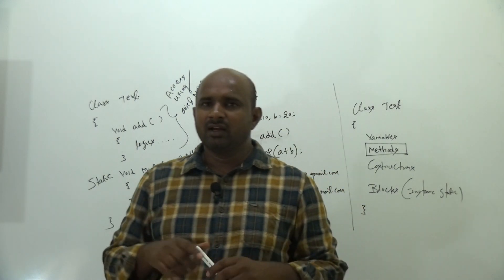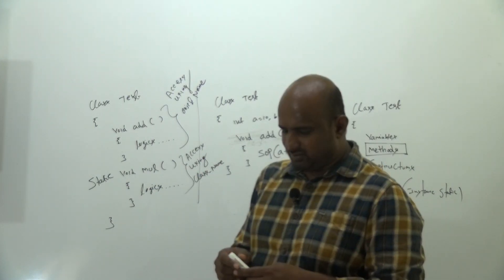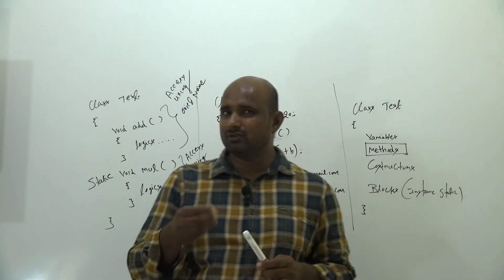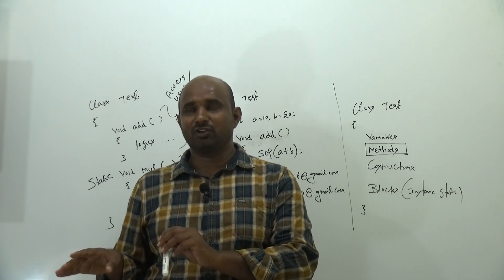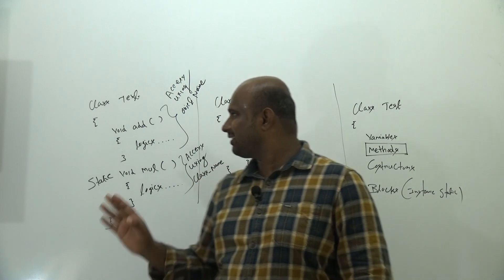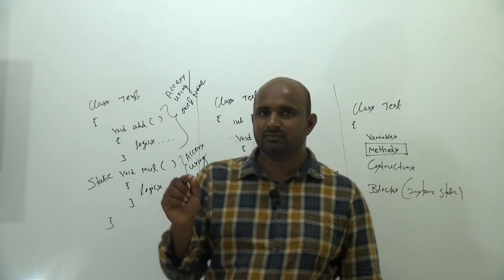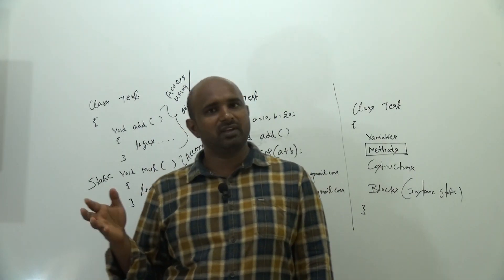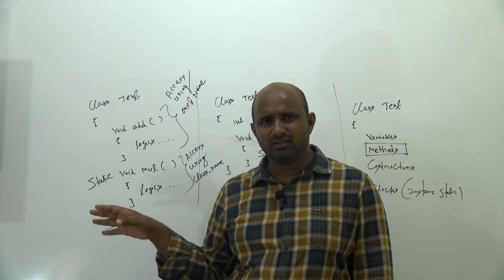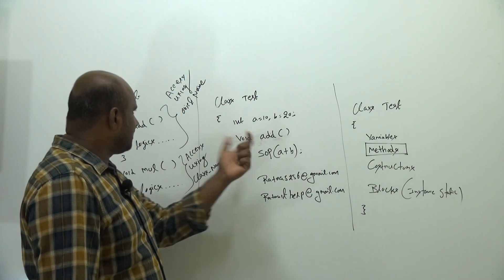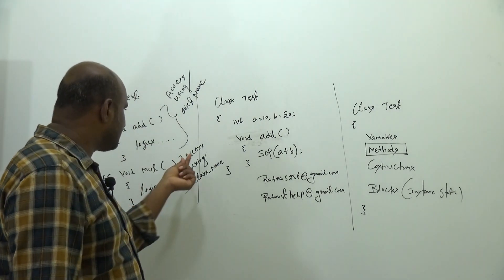To be clear: access instance methods using the object name, and access static methods using the class name. For example, public static void main - where you find the static modifier, that is a static method. The main method is a static method.